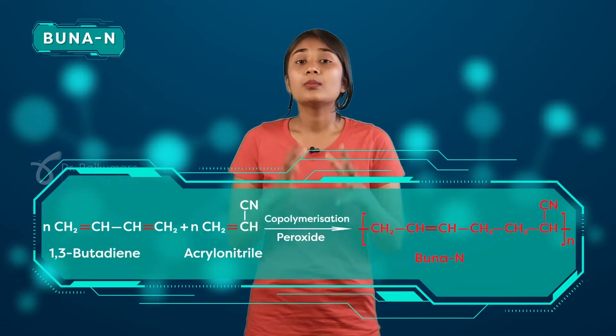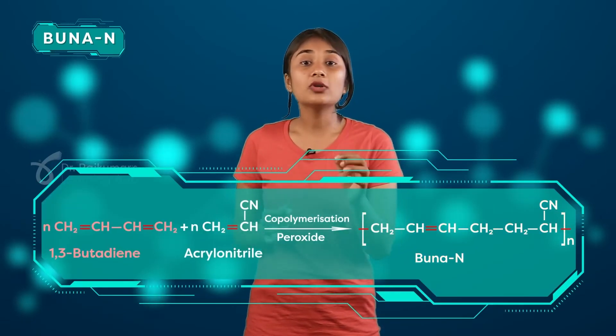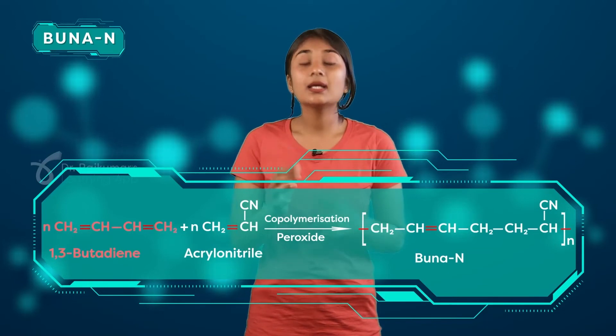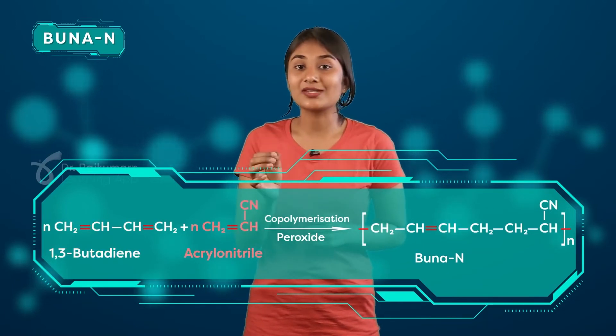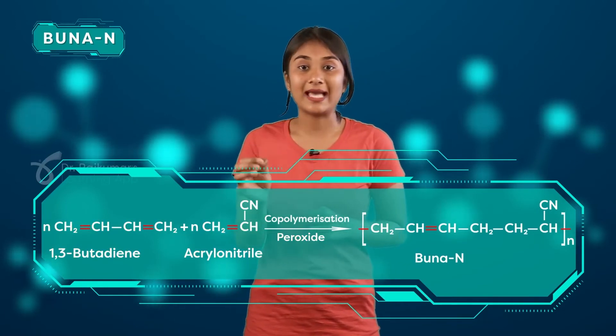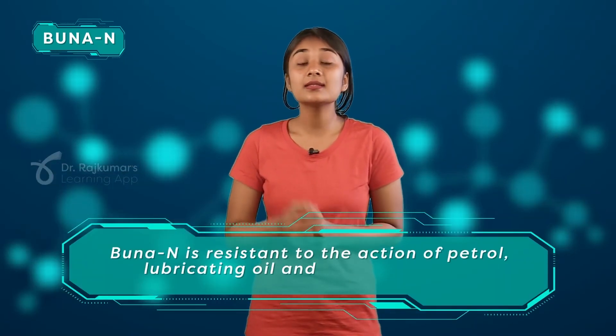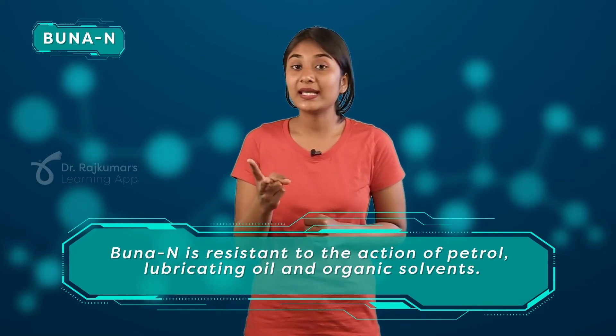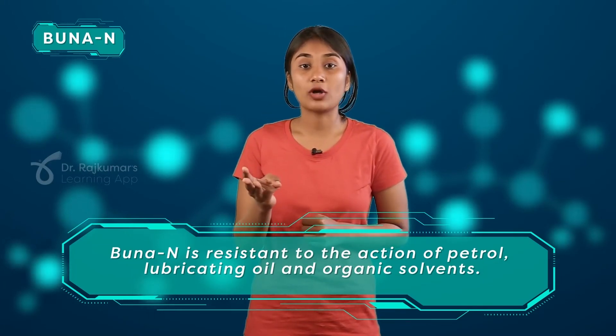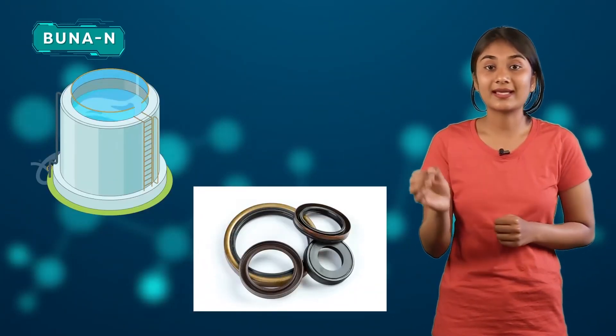The second one is Buna-N. We have already learnt about Buna-S. Buna-N is prepared when 1,3-butadiene reacts with acrylonitrile in the presence of a peroxide catalyst. Buna-N has high resistance to the action of petrol, lubricating oil, and organic solvents. That is why Buna-N is used in the making of tank lining, oil seals, etc.